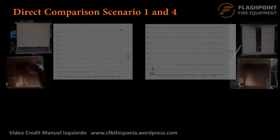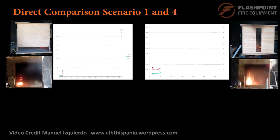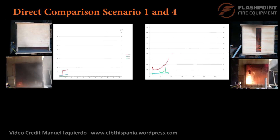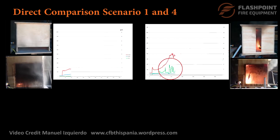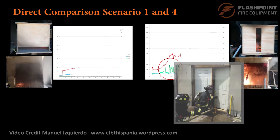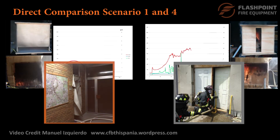Taking a direct comparison between scenarios 1 and 4 highlights the difference in orientation and position of a single narrow opening on the compartment. The highest heat release rate was achieved with a narrow vertical opening, similar to a manually controlled door. In direct comparison, the lowest heat release rate occurred with the single narrow opening positioned horizontally across the bottom of the compartment — the same configuration achieved by using a smoke stopper.